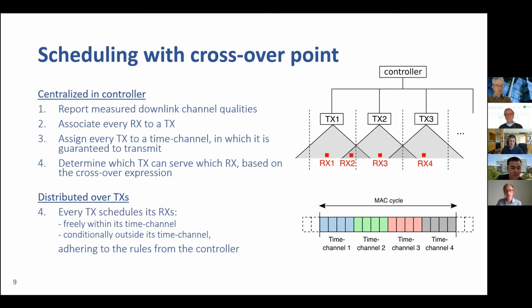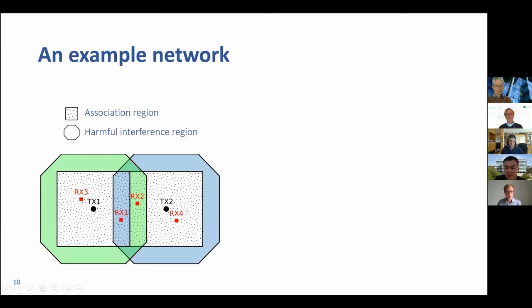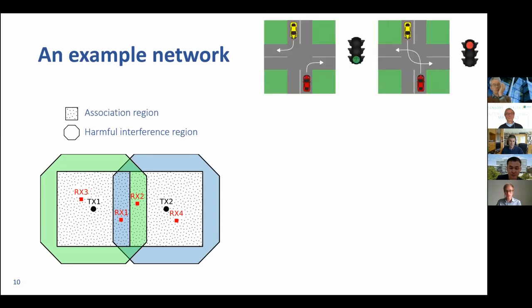Let us make this a bit more clear with an example. We have a two-transmitter network and four receivers. Receiver one and receiver three are associated to transmitter one, and transmitter two is responsible for receiver two and receiver four. Let us recap the traffic light metaphor: we aim to decide what can be happening in parallel and what can't. When transmitter one sends to receiver three, transmitter two can send in parallel to receiver four, because none of these receivers is in the harmful interference region. However, when transmitter one sends to receiver one, and receiver one is in the harmful interference region of transmitter two, then transmitter two cannot be active at the same time.